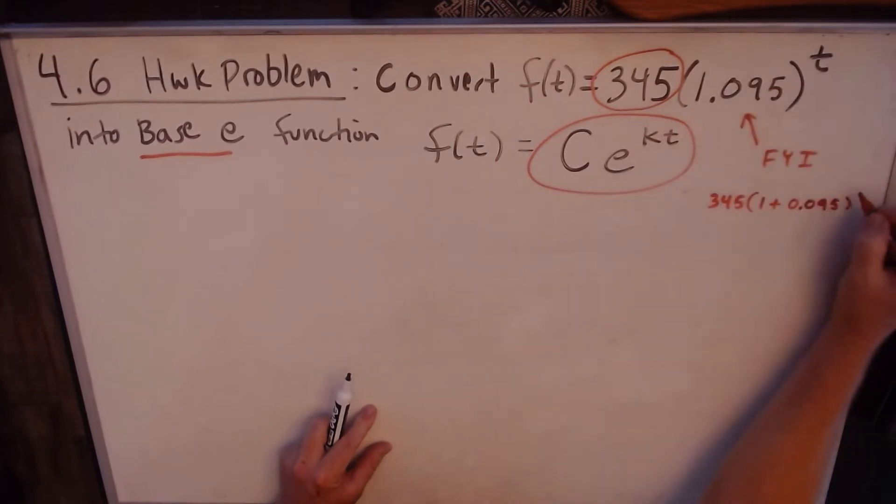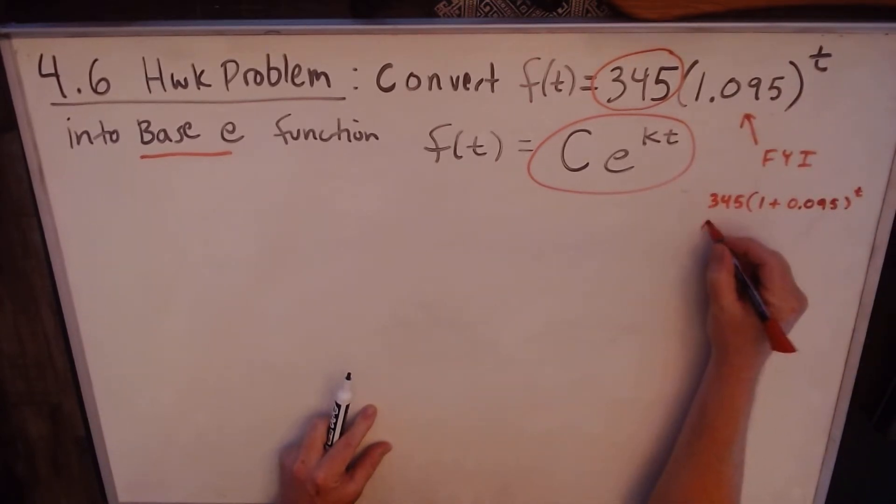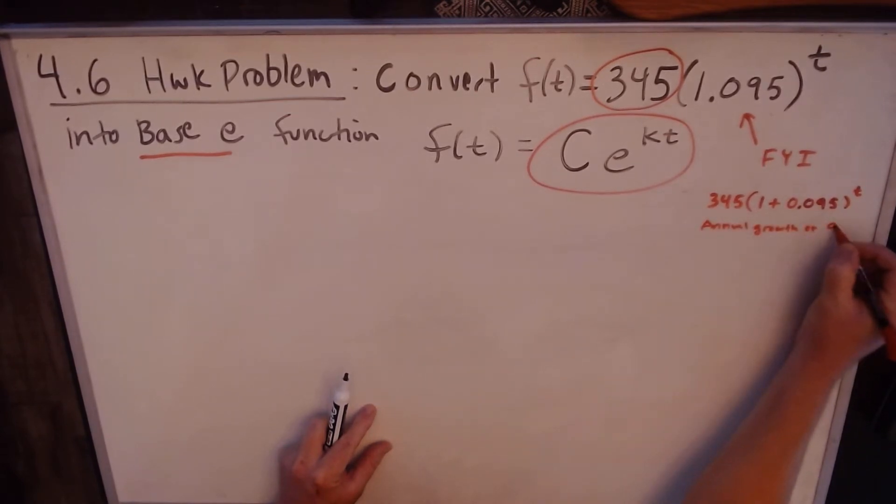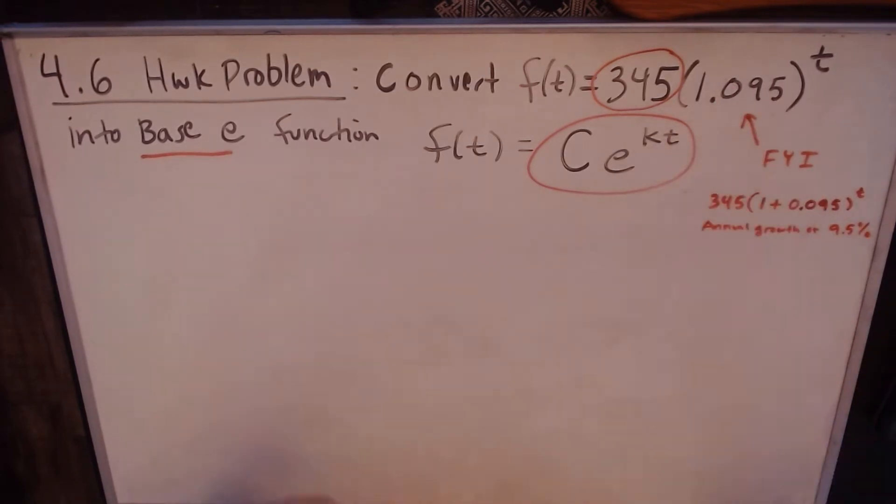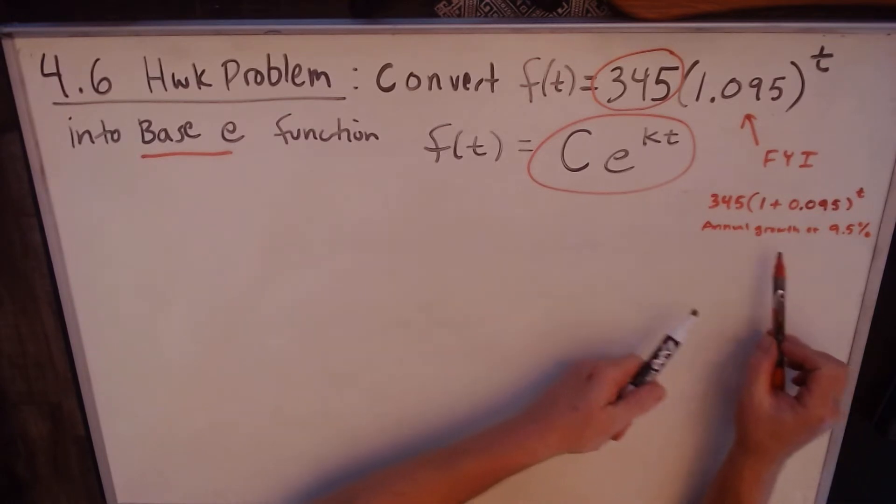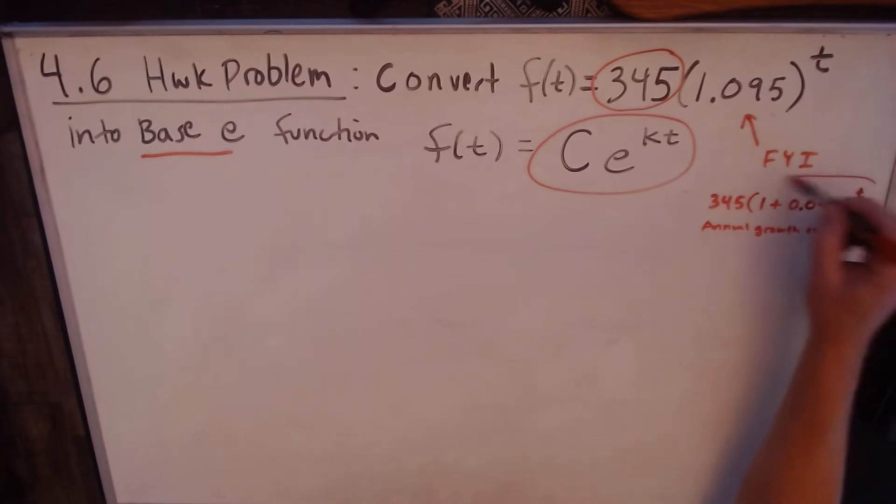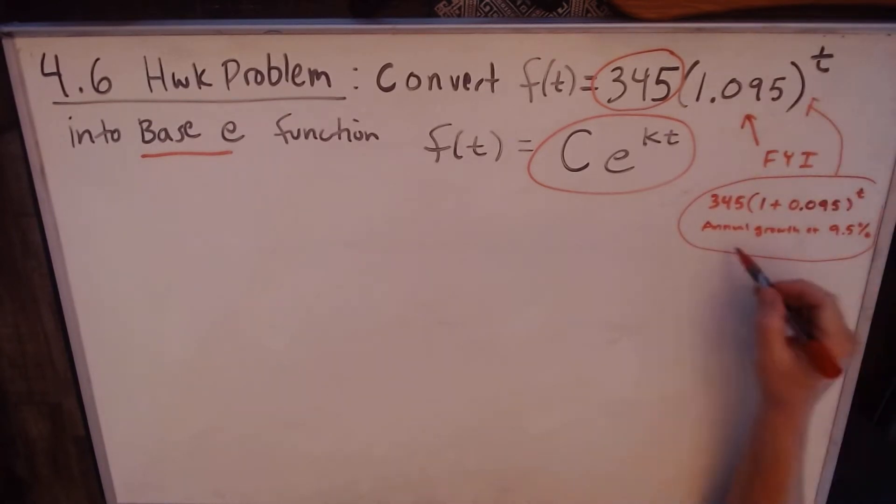So this would be an annual growth of 9.5%. That's what this formula would represent. You could think of it as money, the annual growth of money at a particular interest rate, or you can think of it as population. You have 345 people in the town and it's growing at a rate of 9.5%. However you want to think about it really doesn't matter, but that's what this function represents.